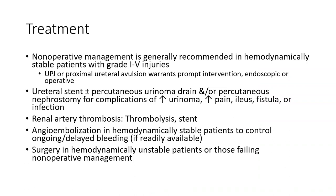Nonoperative management is generally recommended in hemodynamically stable patients with grade 1 to 4 injury. UPJ or proximal ureteral avulsion warrants intervention, either endoscopic or operative, including ureteral stenting plus or minus percutaneous urinoma drainage and percutaneous nephrostomy for complications of increasing urinoma, increased pain, ileus, or infection. Renal artery thrombosis may be managed with thrombolysis, stenting, or angioembolization in hemodynamically stable patients to control ongoing delayed bleeding if readily available. Surgery is considered in hemodynamically unstable patients or those failing nonoperative management.